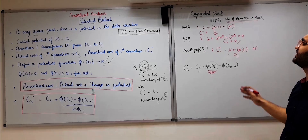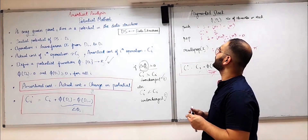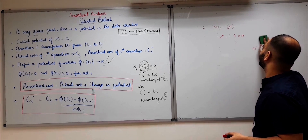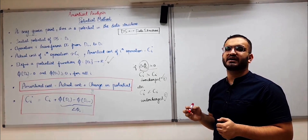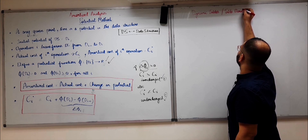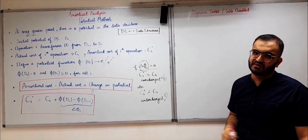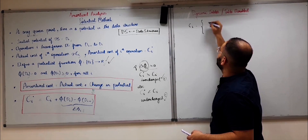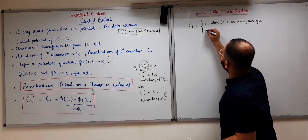These are the amortized time complexities of the different operations in the augmented stack, determined using the potential method formula. Now we will look at the example of dynamic tables, which we have seen for the other two methods — accounting method and aggregate method — and try to find the time complexity for n insertions and a single insertion using the potential method. This process is also known as table doubling because the table is always doubled whenever there is an overflow. Please watch the previous video if you need a clear explanation of how dynamic tables work.